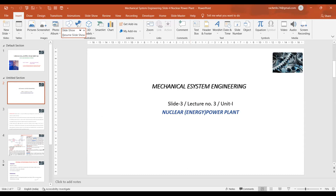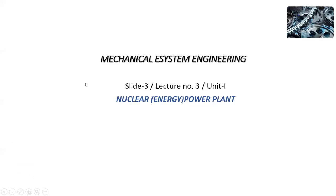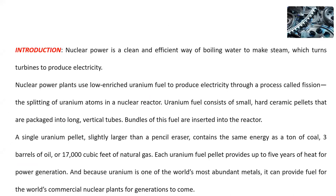Both the nuclear power plant and the thermal power plant are based on non-renewable sources of energy — that is, exhaustible and conventional types of sources of energy. In the first slide, we are going to see the working principle of the nuclear power plant and what its components are, followed by the merits and demerits.